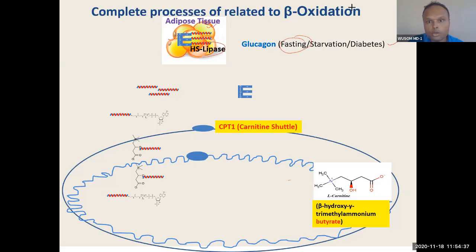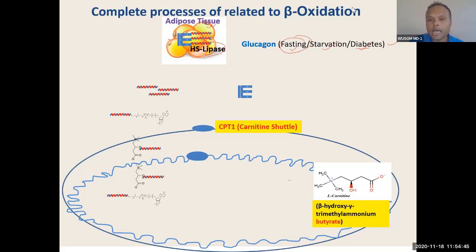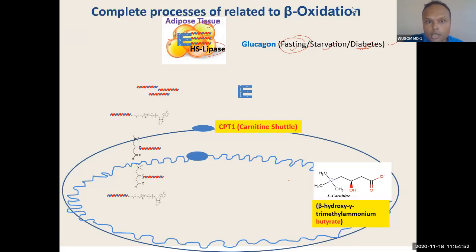In diabetes, glucagon dominates. Starvation — glucagon is high. In fasting — glucagon is high. In diabetes — glucagon is high. You can correlate all these conditions. Lipolysis occurs in all these conditions because of glucagon.